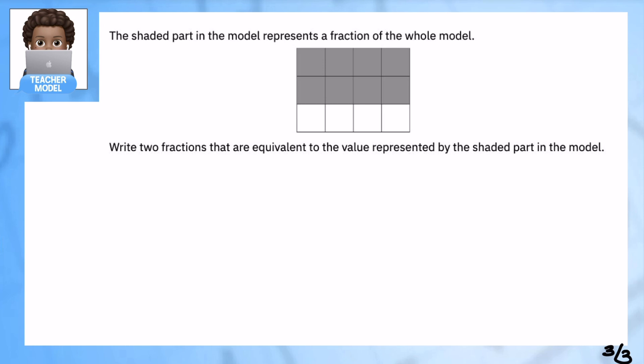Let's look at our last example. The shaded part of the model represents a fraction of the whole. I can see that if I went all the way around all 12 pieces, I would have 12 out of 12, which is one. I'm going to write two fractions that are equivalent to the value represented by the shaded part.